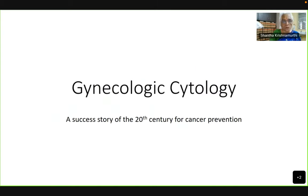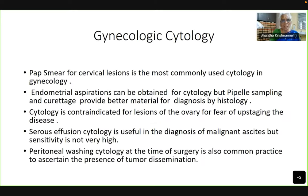Gynecological cytology is a success story of the 20th century for cancer prevention. The Pap smear for cervical lesions is the most commonly used cytology in gynecology. Endometrial aspirations can be obtained for cytology, but Pipelle sampling and curettings provide better material for diagnosis by histology. Cytology is contraindicated for patients with ovarian lesions for fear of upstaging the disease. Serous effusion cytology is useful in the diagnosis of malignant ascites but sensitivity is not very high. Peritoneal washing cytology at the time of surgery is also common practice to ascertain the presence of tumor dissemination.